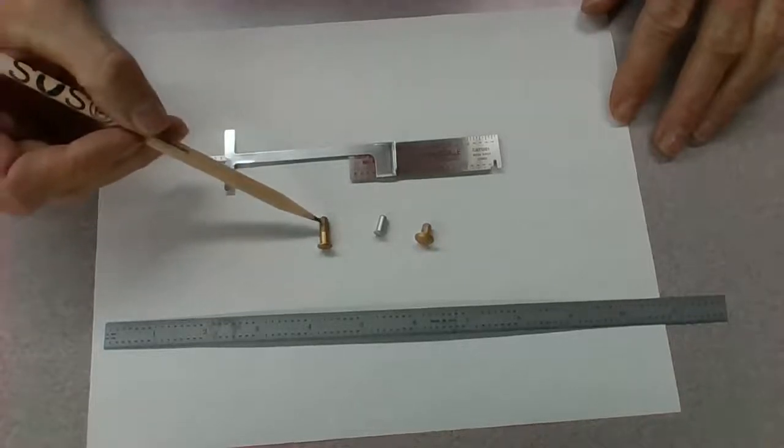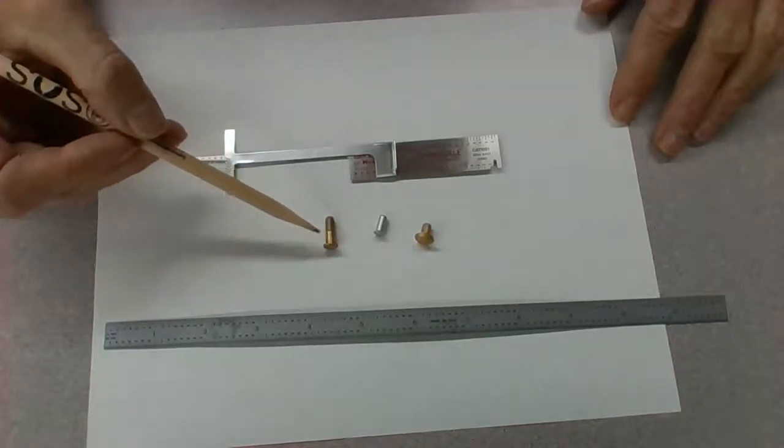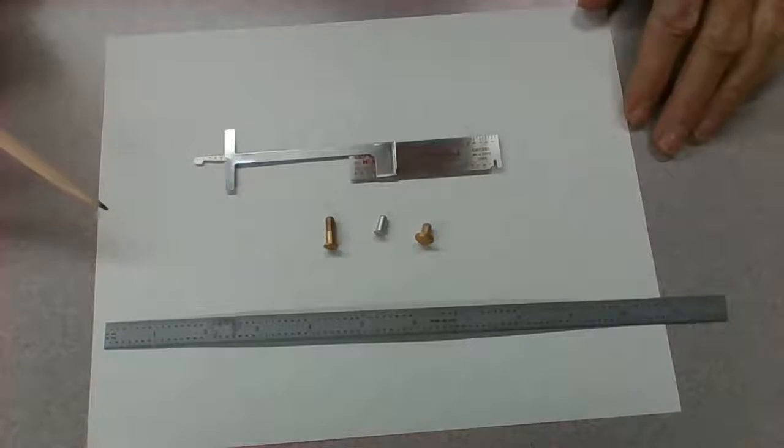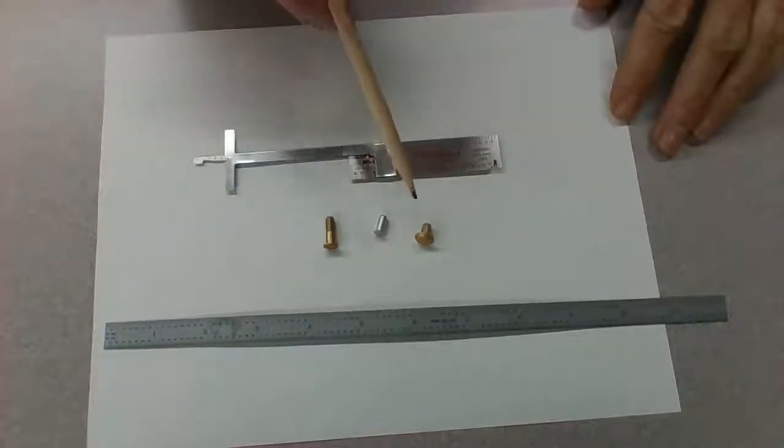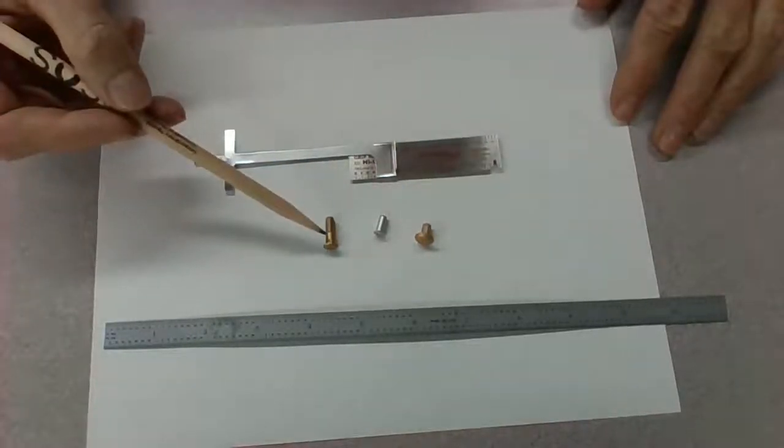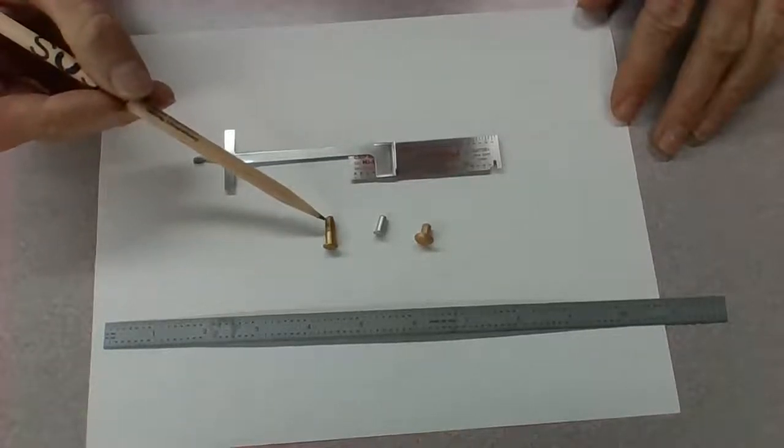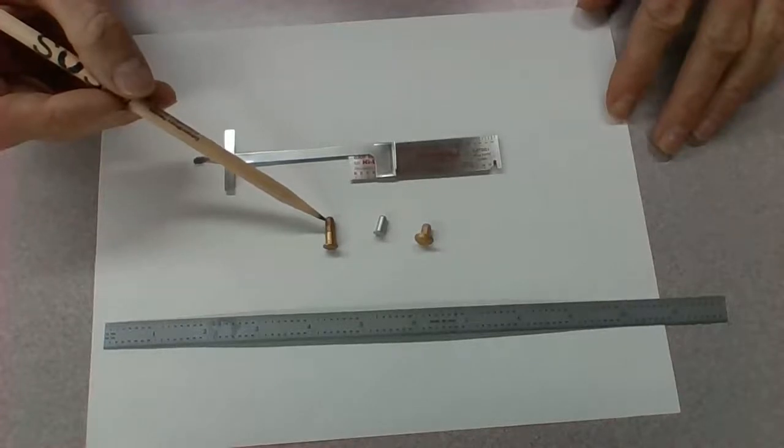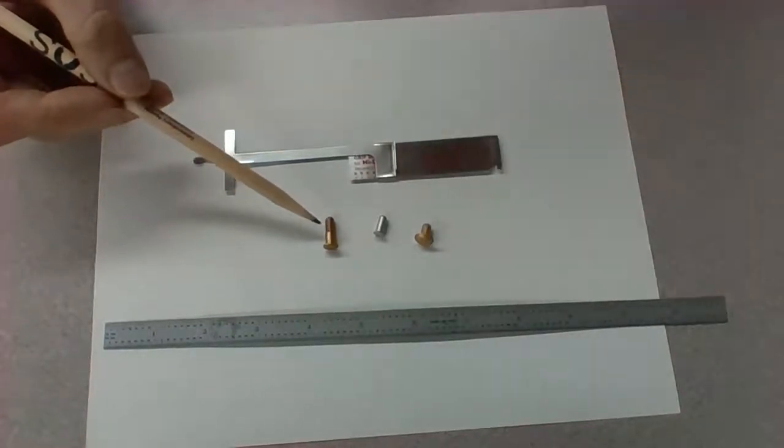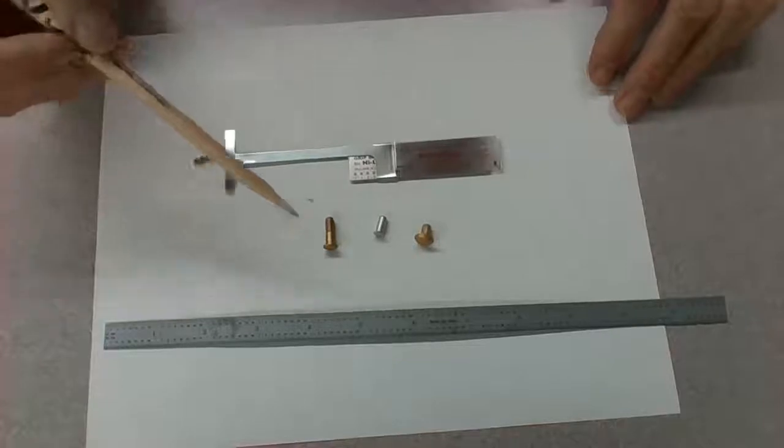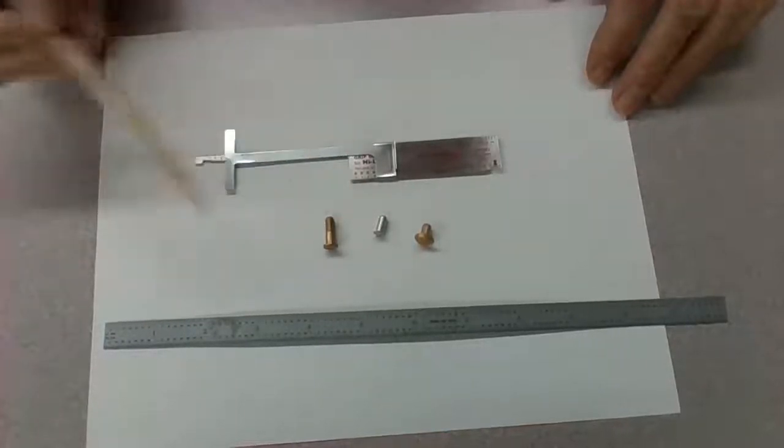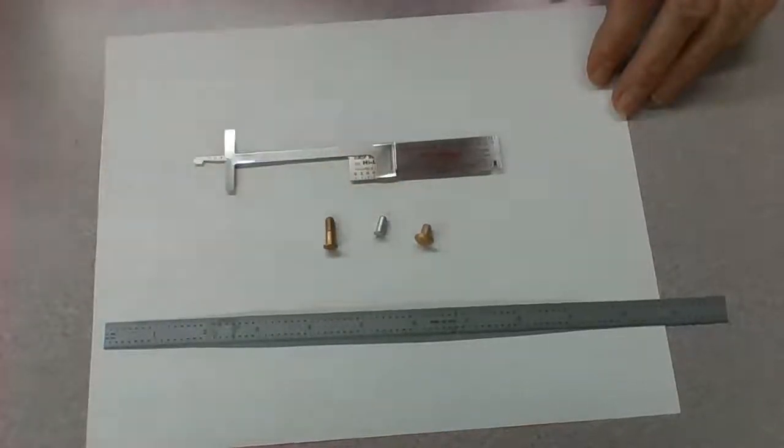And lastly, we have one that's threaded right here. And this is called a highlock rivet. So, we have, and this actually is a rivet. This is driven in with a rivet gun. And then there's a nut that's put on the end of this. So, this is actually called a highlock rivet. So, we have a highlock rivet. We have a countersunk rivet. And we have a button head rivet.